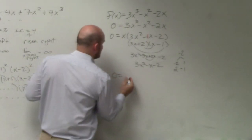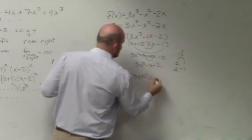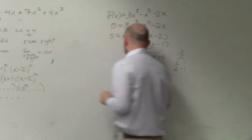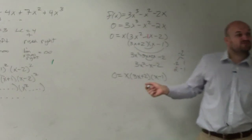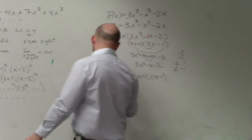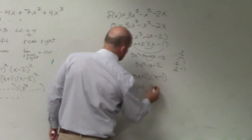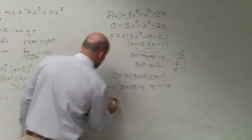So now I have 0 equals x times 3x plus 2 times x minus 1. Now, like in your focus lessons from the first quarter, you apply the zero product property and then solve.